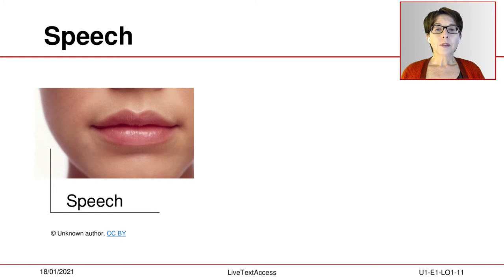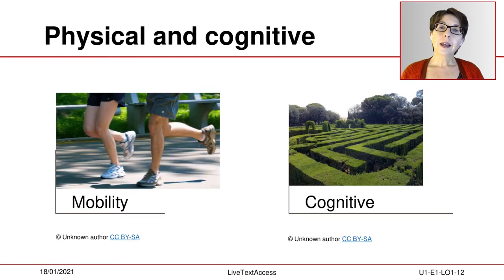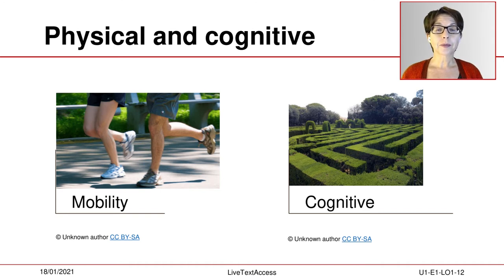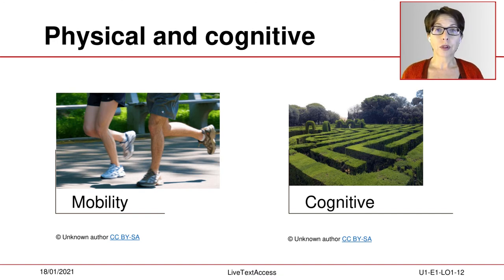Speech disabilities are related to the inability to produce a speaking voice, also known as mutism, or to the inability to articulate words or sounds. Physical disabilities are related to the inability to move body parts or coordinate movement, and also to paralysis. Lastly, cognitive disabilities are related to impairments that affect mental processes such as perception, memory, thinking, or understanding.